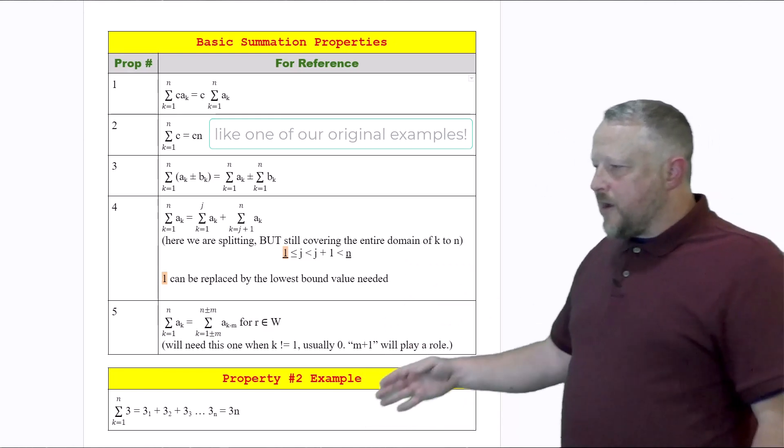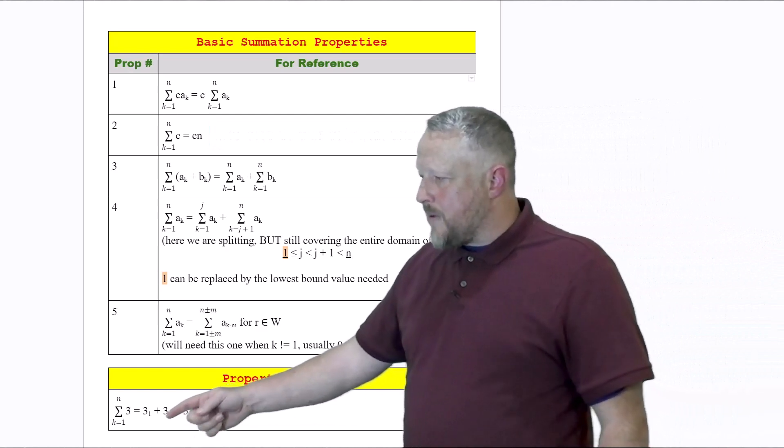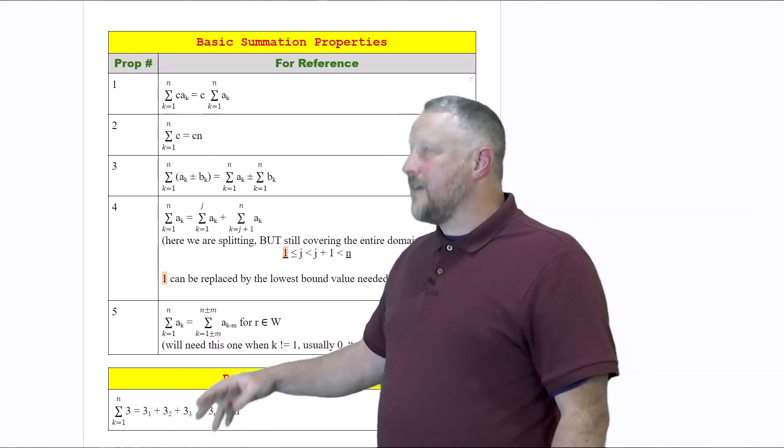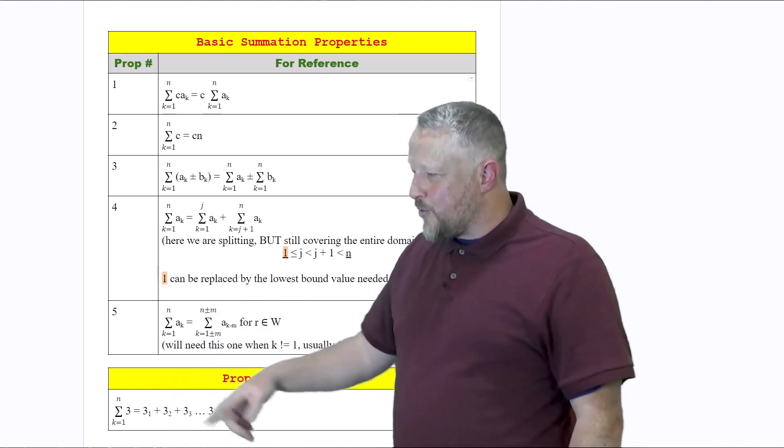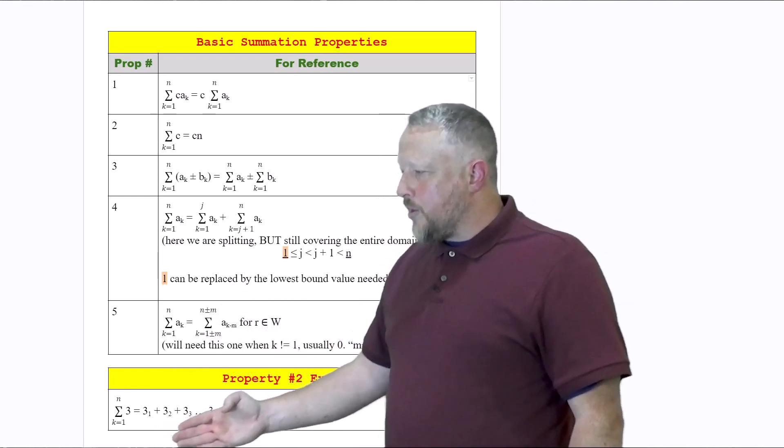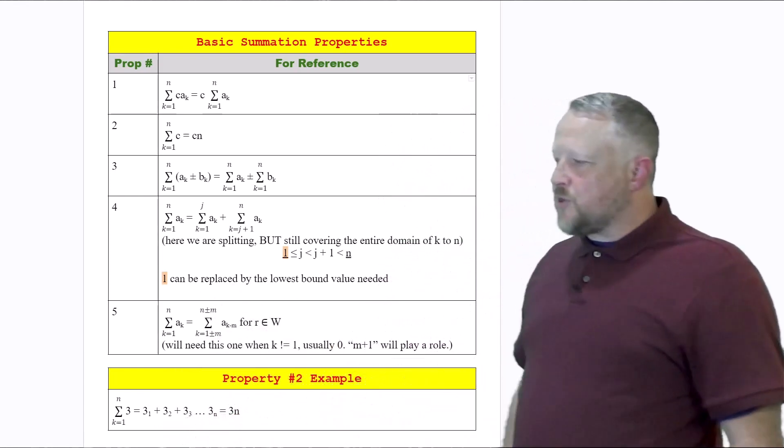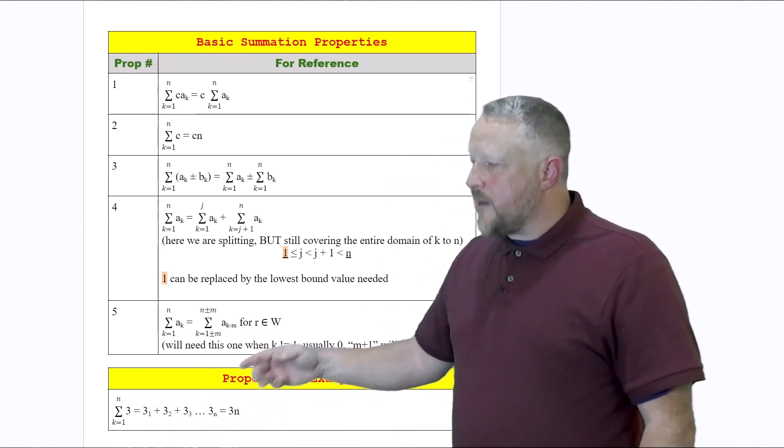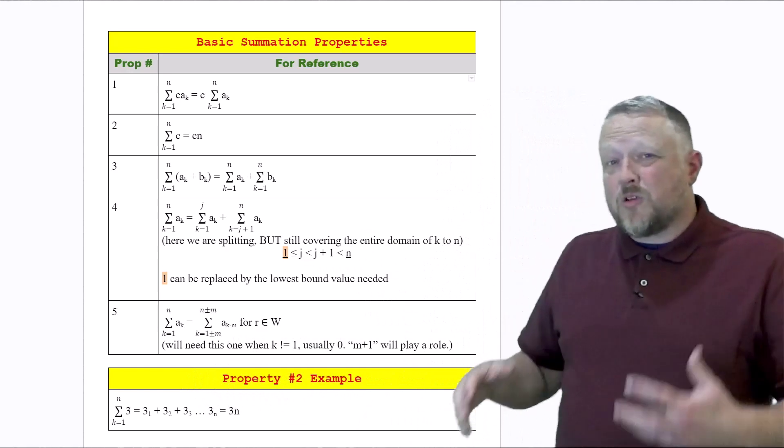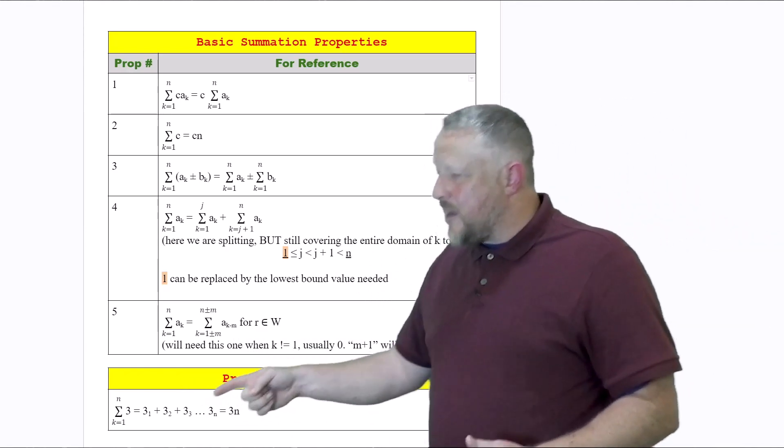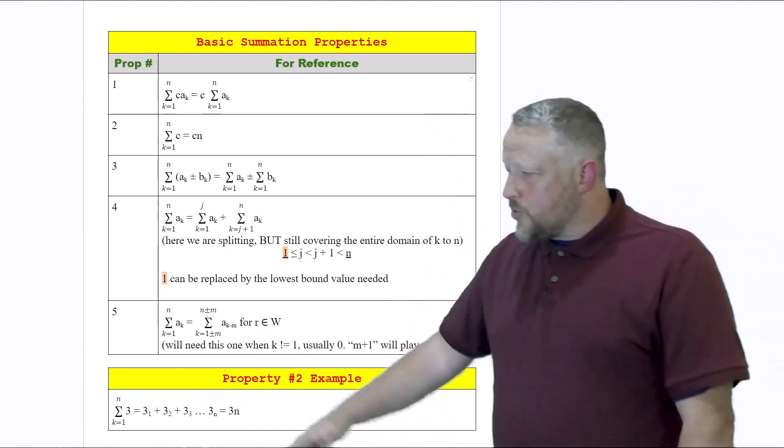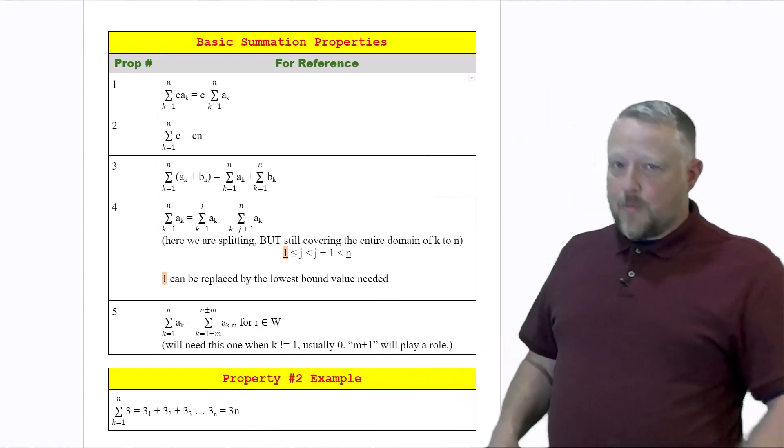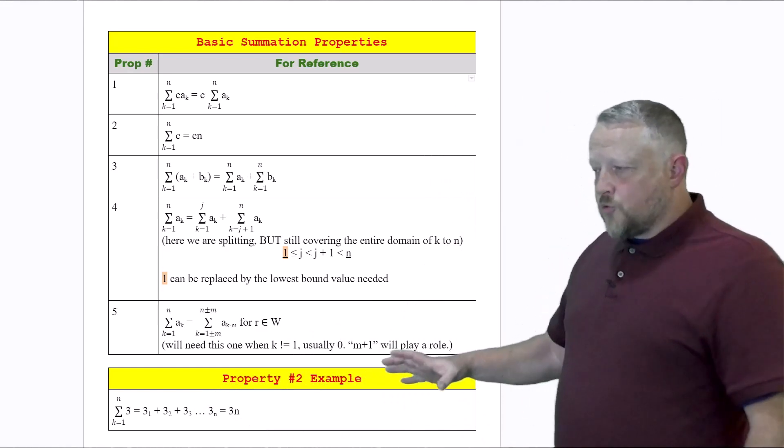Let me go over number two here. If we have the summation from K equals one to N of three, it would be three of one, three of two, three of three, all the way up to three of N. Instead of just adding all of those together, we can just multiply because we're adding the same thing each time. We can use multiplication to get 3N for that particular one. Try it out and prove me wrong.